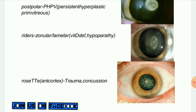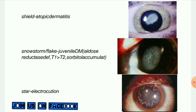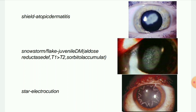Next image: Shield cataract in atopic dermatitis. Cataract develops in 10 percent of cases, between 15 to 30 years of age. It is bilateral in 70 percent of cases and frequently becomes mature. The anterior subcapsular plaque — shield cataract — is seen with wrinkles in the anterior capsule.